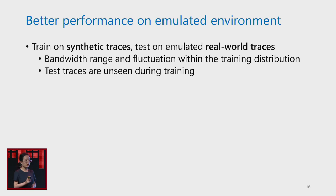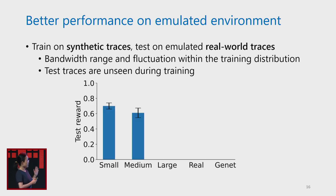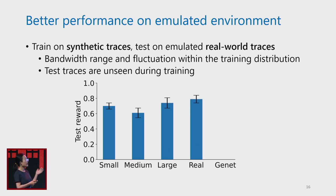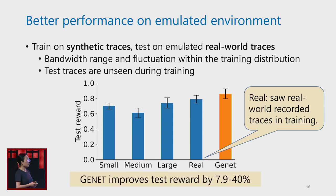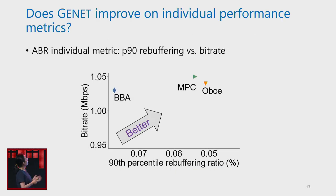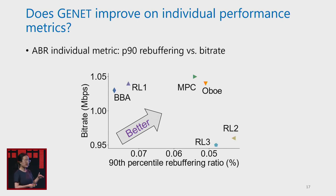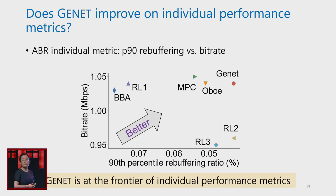Compared with the traditional baselines, we also include a special baseline called RL-real, which even saw some real-world recorded traces during training. Despite this, Genet still achieves the highest testing reward. Looking beyond the reward metric — which is a combination of many performance metrics — we show results on individual metrics in the ABR emulated environment. The x-axis is the 90th percentile rebuffering ratio and the y-axis is bitrate quality. Genet is at the frontier of individual performance metrics, proving it doesn't only optimize for the reward but also improves individual performance metrics significantly.